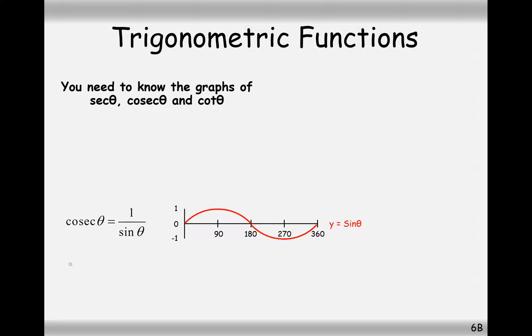Now just a reminder then that 1 over a decimal, a decimal generally that's in between 1 and 0, is going to give you a much bigger number. For example, 1 over 0.2 is going to give you 5, 1 over 0.01 is going to give you 100, so these graphs are going to be quite big, both on the negative side and on the positive side.